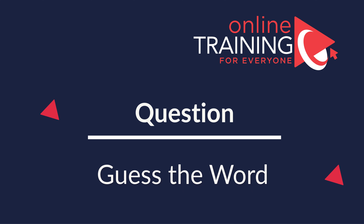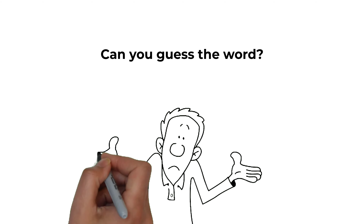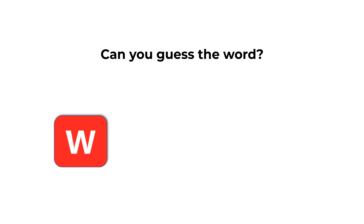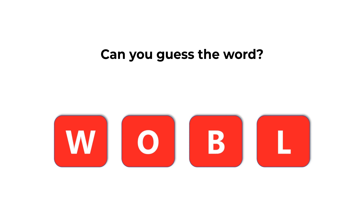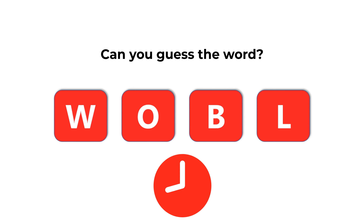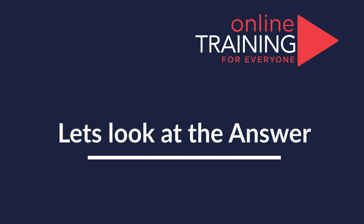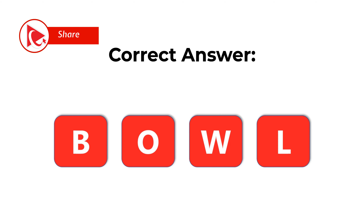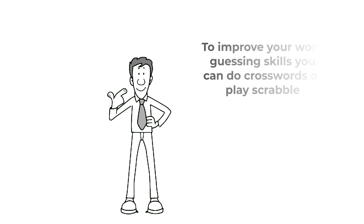Here's a cool question that you frequently get on the test. You're presented with four different letters — W, O, B, and L — and you need to guess the word using all the letters. Give yourself 10 to 15 seconds. The correct answer is 'bowl,' spelled B-O-W-L. Hopefully you nailed this question and now know how to answer similar problems on the test.